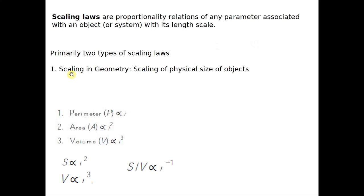Scaling laws are of two types. First, scaling in geometry, which refers to the different physical size of objects. The first parameter is the perimeter — perimeter is just referring to the total length, so perimeter P will be directly proportional to the length scale L. That means if I reduce the length scale, the perimeter also reduces by the same amount or the same factor.